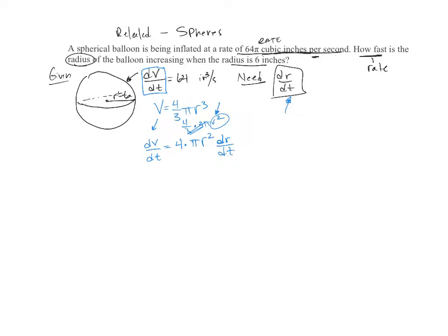So we know some things. We know what dV/dt is. That's 64 inches cubed per second, 4 pi over here, 64 pi, I'm sorry, 64 pi is what we're given, 64 pi inches per second. And on this side we know that this is 4 pi r, which they want us to find out at the instant that it's 6, 6 squared dr/dt.